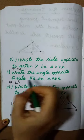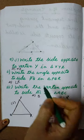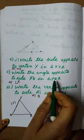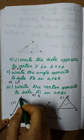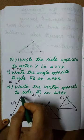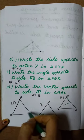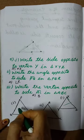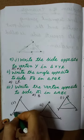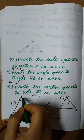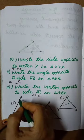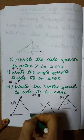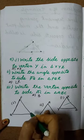Write the angle opposite to side PQ. I have drawn it here. This is the side PQ. What is the opposite angle here? There are three angles: angle P, angle Q, angle R. They are asking what is the angle opposite to side PQ. The opposite angle is R.